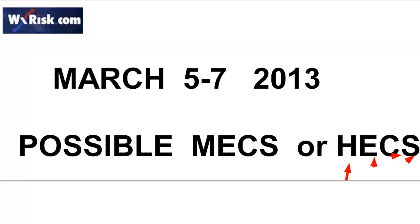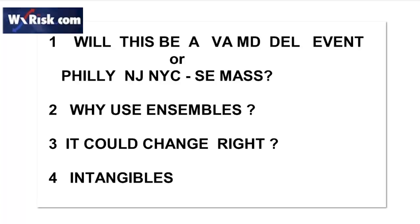We'll get right to it and take a look at what's going on here. We're going to be talking about whether or not this is going to be a Virginia, Maryland, or Delaware, West Virginia event, or a snowstorm of significance for Philadelphia, New Jersey, New York City, and southeast Massachusetts, or some combination thereof. There are still possibilities. We'll also be showing why we should use ensembles, especially at this time frame, and what could change, and intangibles.